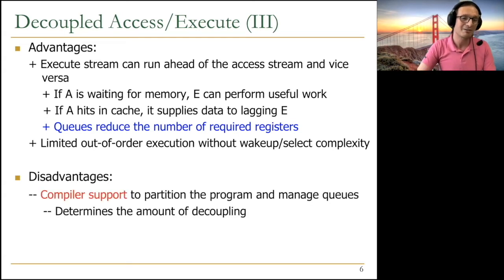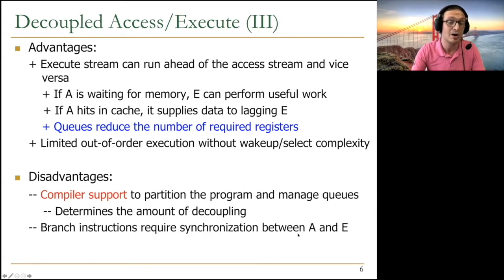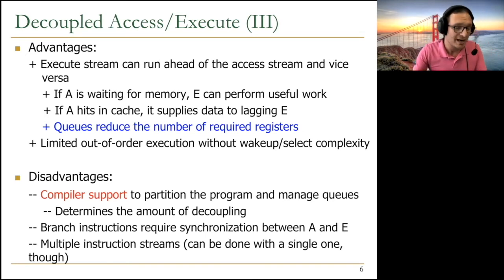Of course, everything comes with disadvantages. Compiler is important here. Compiler was important for VLIW, for modern historical ISAs, and for decoupled access execute. You need to have compiler support to partition the program and manage the queues. This determines the amount of decoupling you can get. One other disadvantage is branch instructions require synchronization between A and E, because you're taking a single instruction stream and separating it into two instruction streams. The other disadvantage is multiple instruction streams. But later work showed that this can be done with a single one by taking the single instruction stream and steering it dynamically into multiple processors.